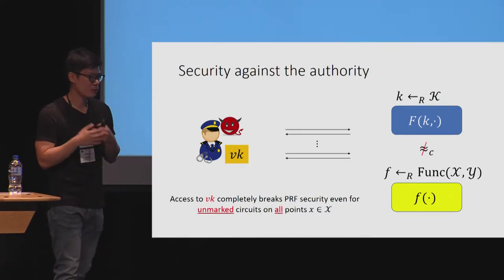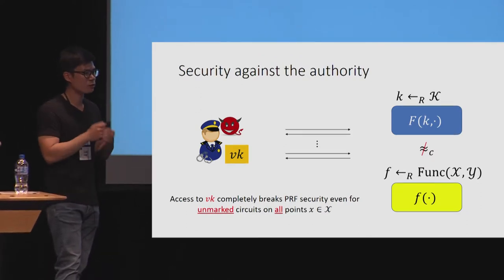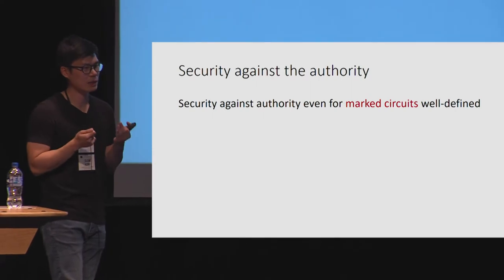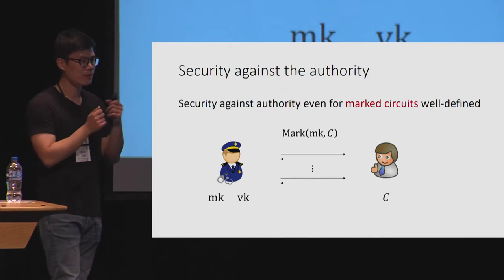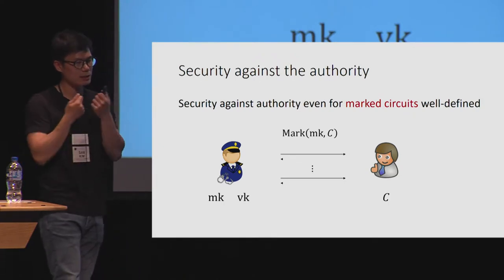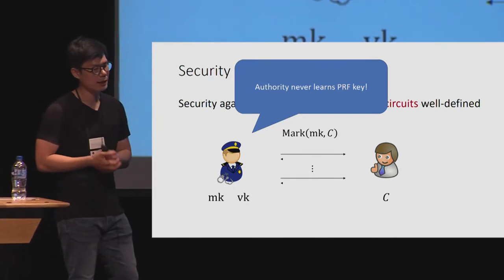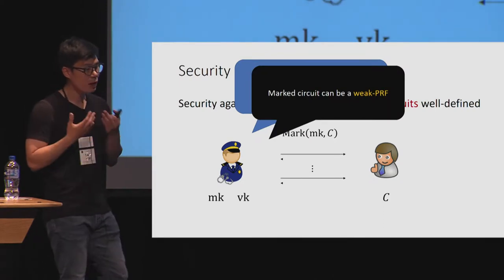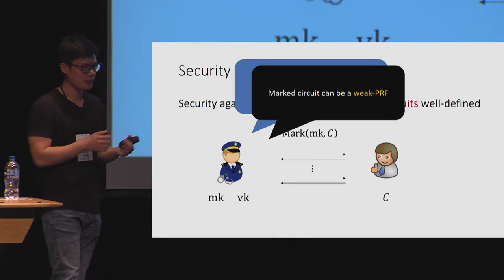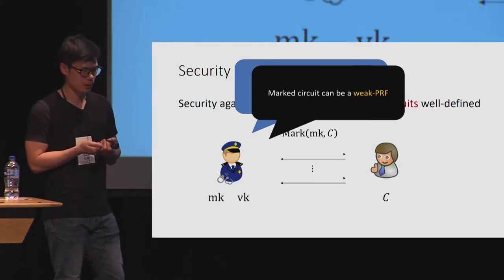However, for unmarked circuits, they should still satisfy some level of pseudorandomness against the verifying authority. If a user generates its own PRF key and uses it without watermarking, that PRF should still be pseudorandom to the authority. And even for marked circuits, security against the authority is actually well-defined — we can consider a scenario where the marking procedure is done by a secure two-party computation between the authority and the user, so the verifying authority never learns the PRF key. Due to the verification algorithm, strong pseudorandomness against the authority is not well-defined, but marked circuits can still be a weak PRF against the authority. Weak PRF still suffices for many applications in symmetric cryptography, like symmetric encryption.